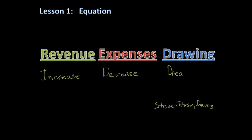Since money is going out of the company, drawing decreases owner's equity. And all these accounts affect owner's equity.